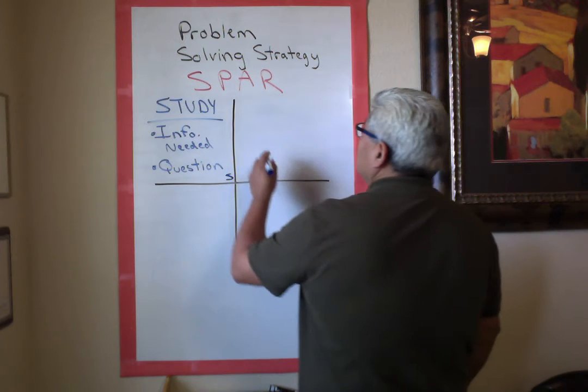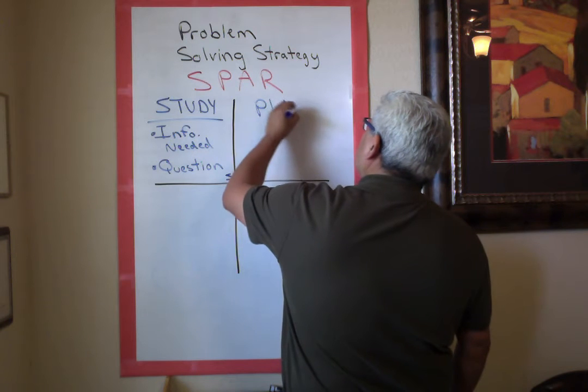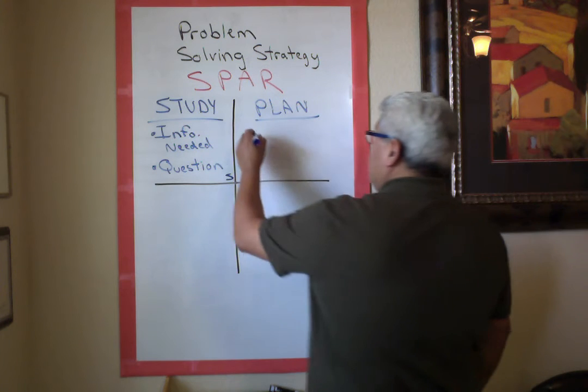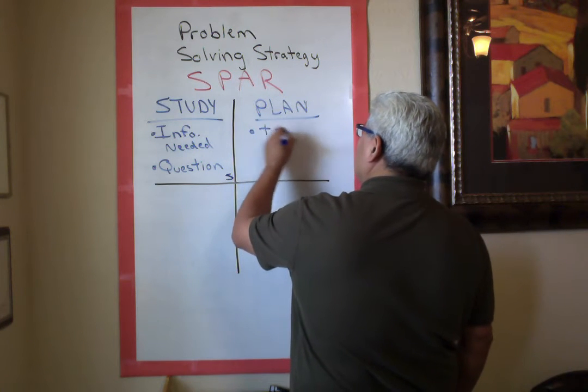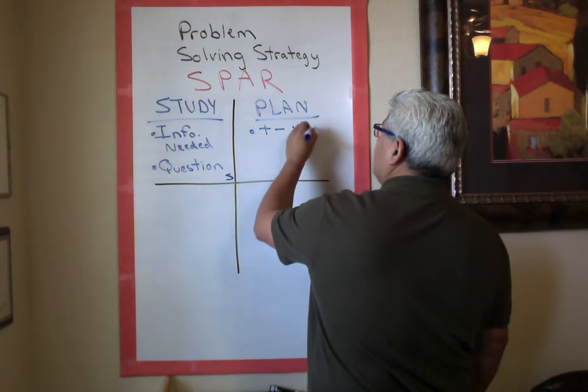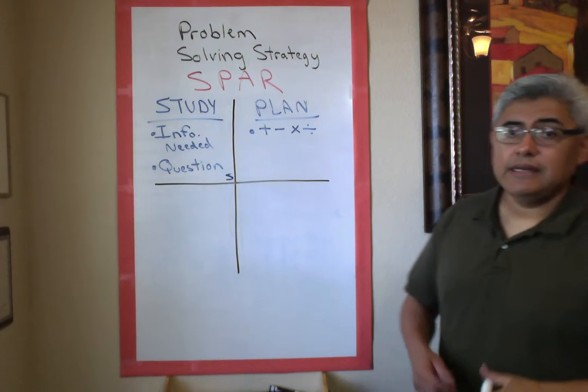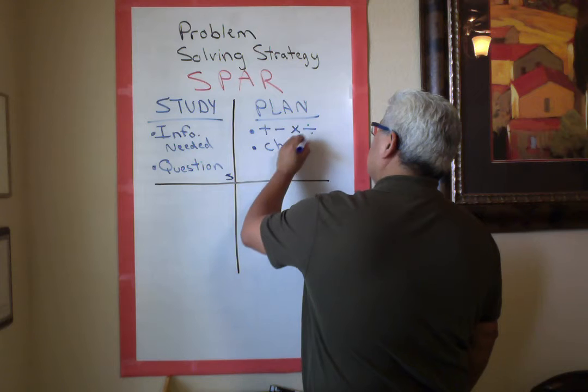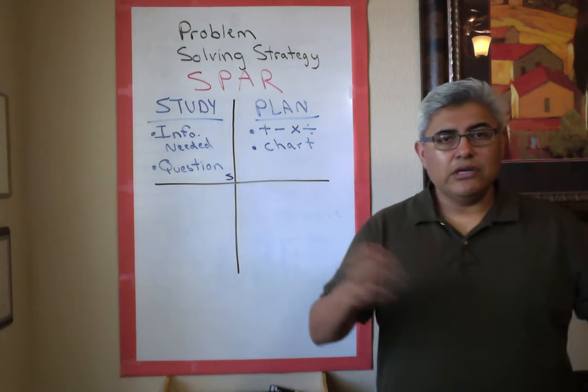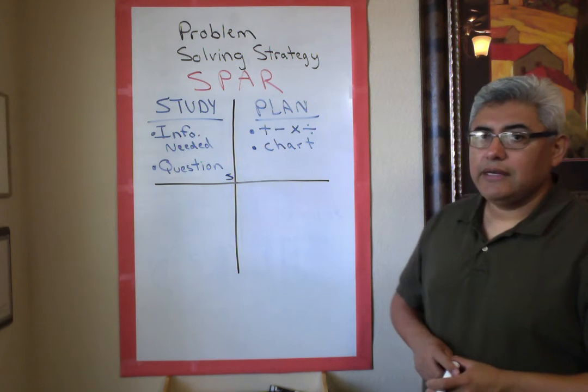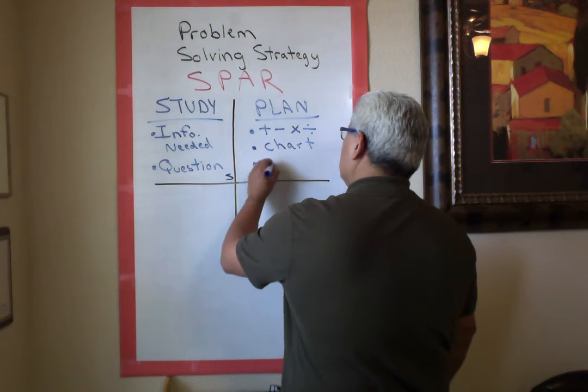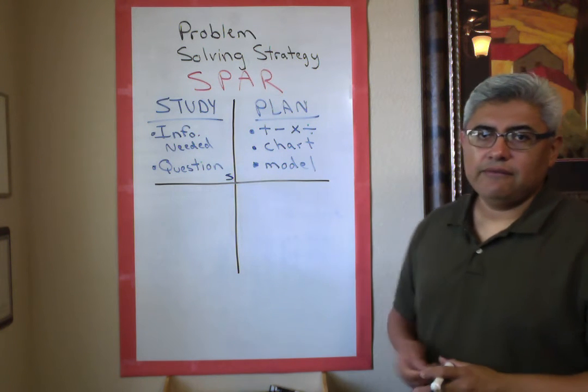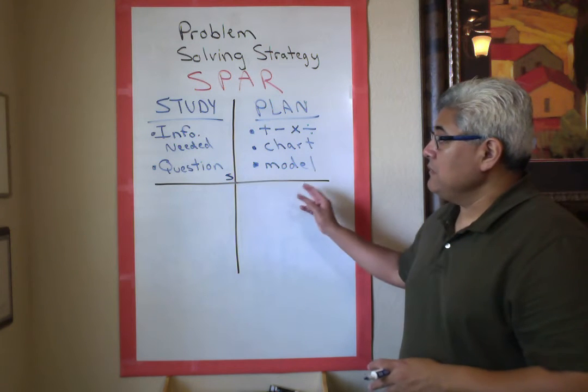Now we're going to do the Plan. What is the plan? The plan can come in many different ways. Some plans could be adding, multiplying, subtracting, or dividing. You could also make a chart - sometimes charts help you look at patterns. You can also make a model for your problem to try to solve it. There are many ways you can plan for a question, but just make sure that your plan answers the question.